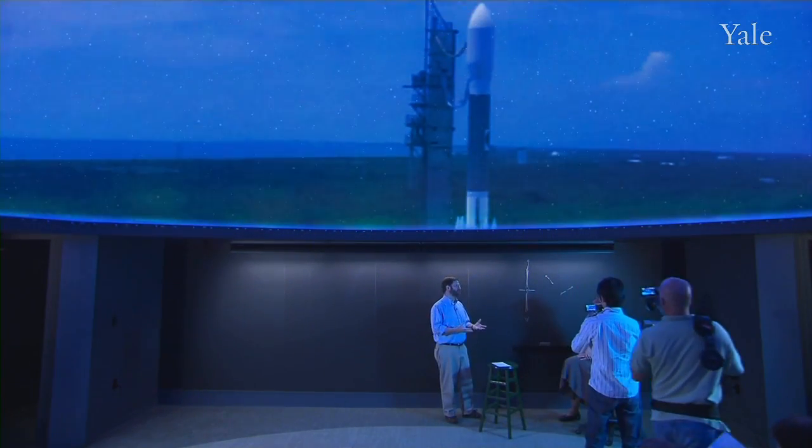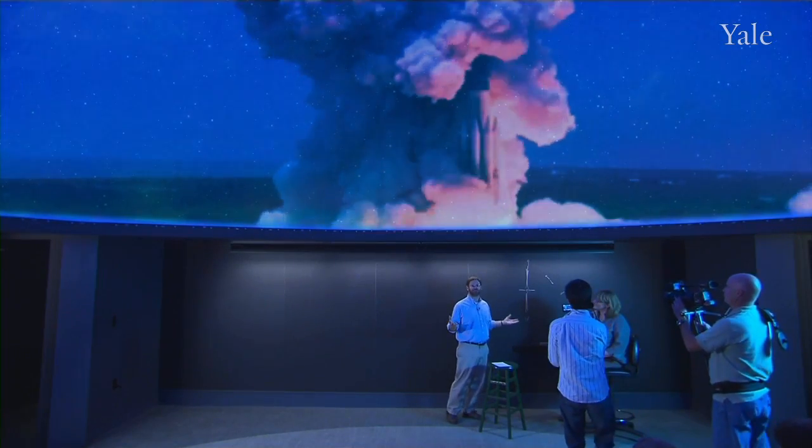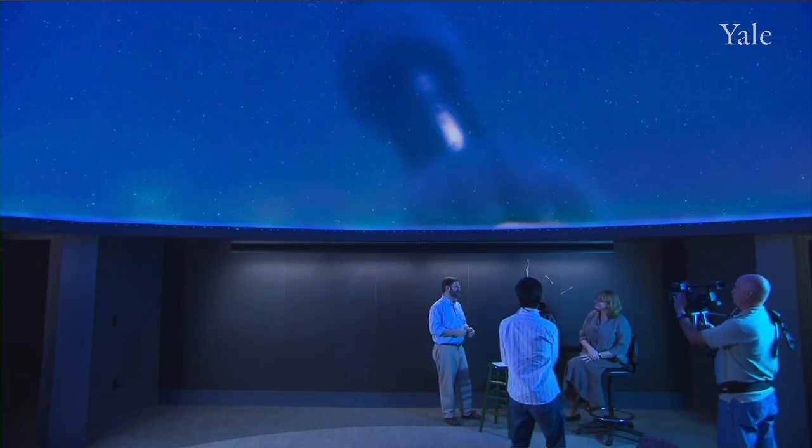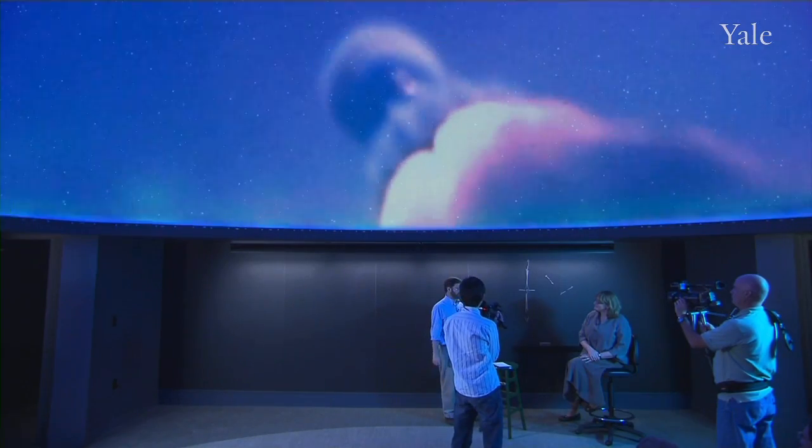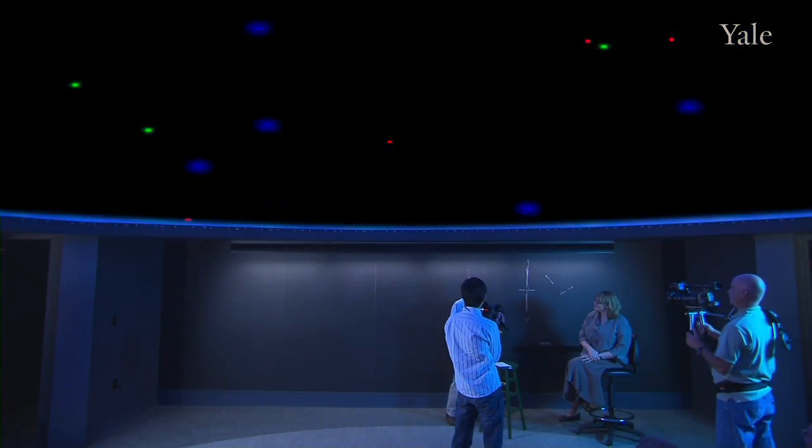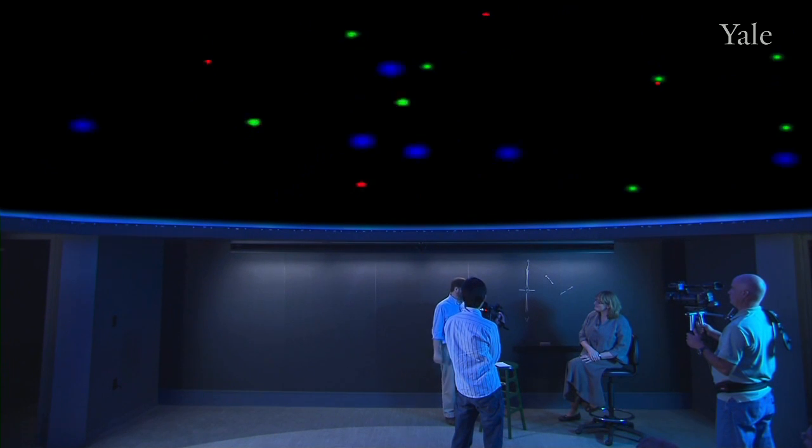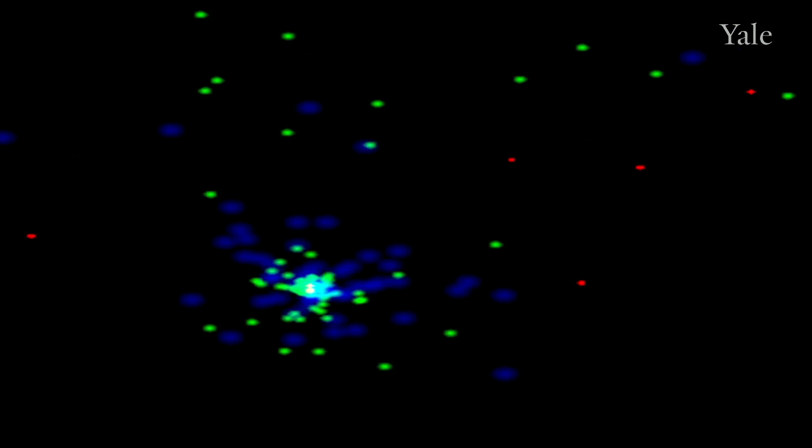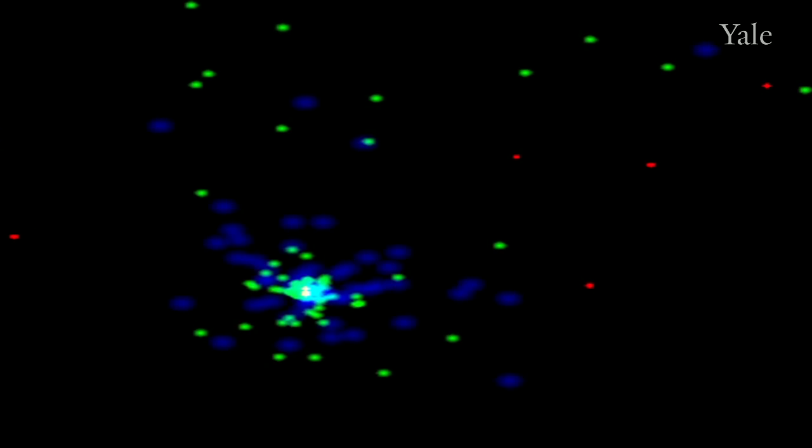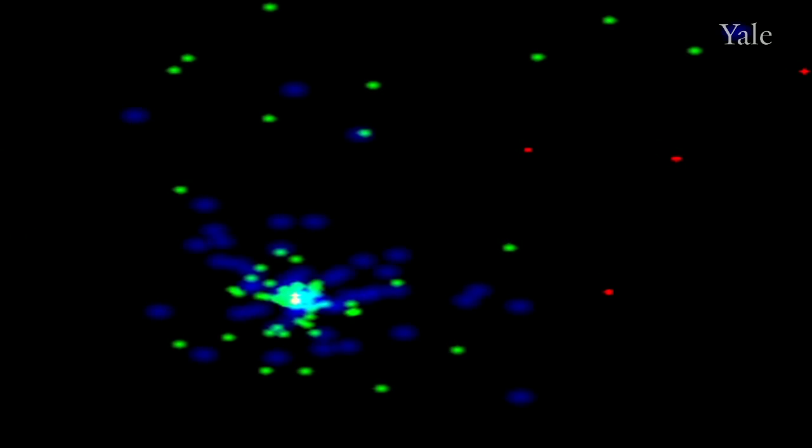And so shortly after the launch of Fermi, when the Fermi team released its first picture of the whole sky, what we discovered was that a particular one of these things, which was not well studied before or particularly thought to be special, happened to be very, very energetic. It was the brightest object in the gamma-ray sky, this hitherto relatively anonymous object.